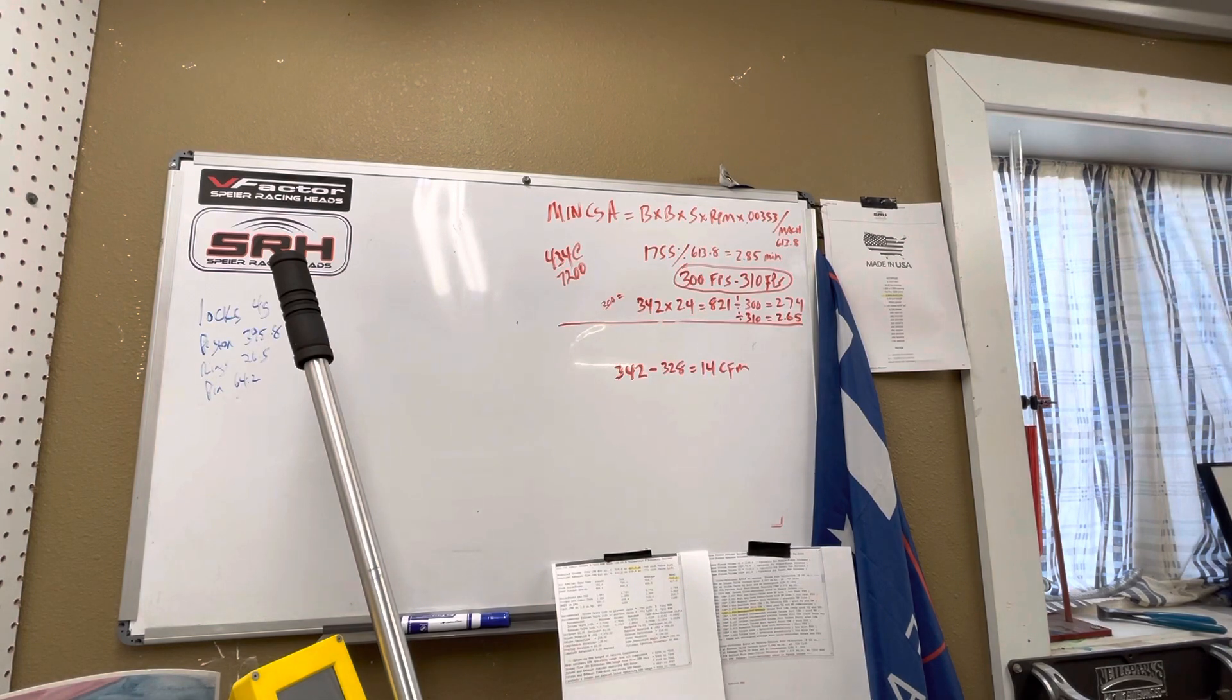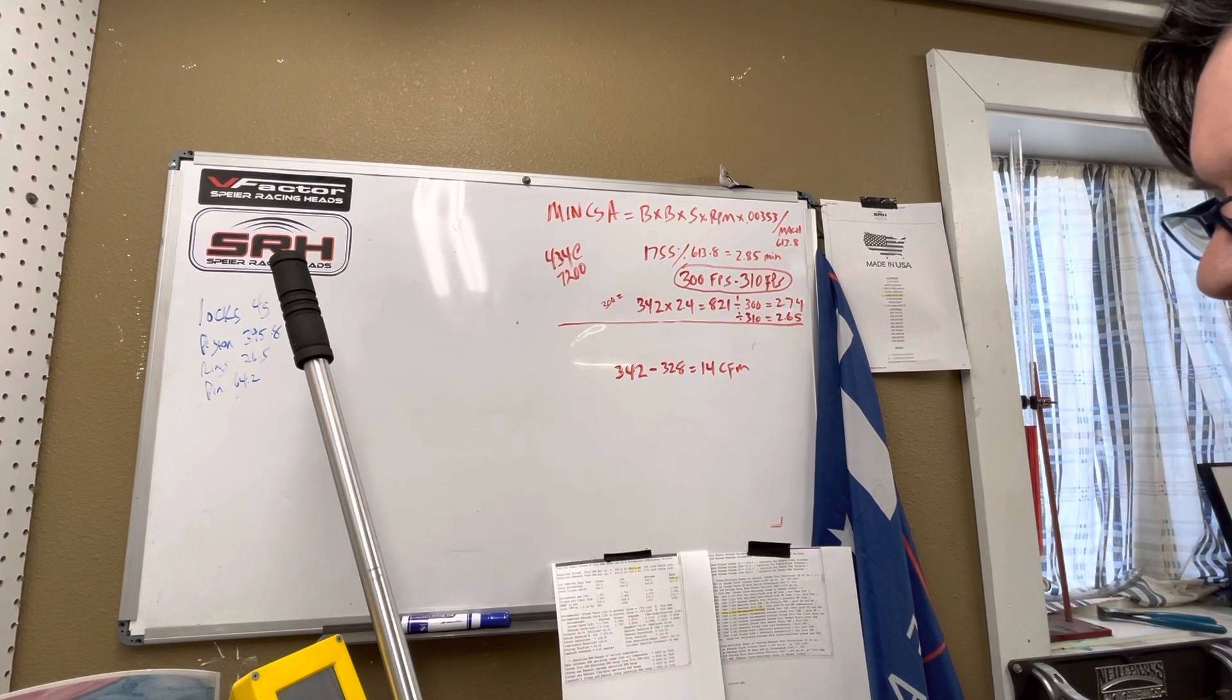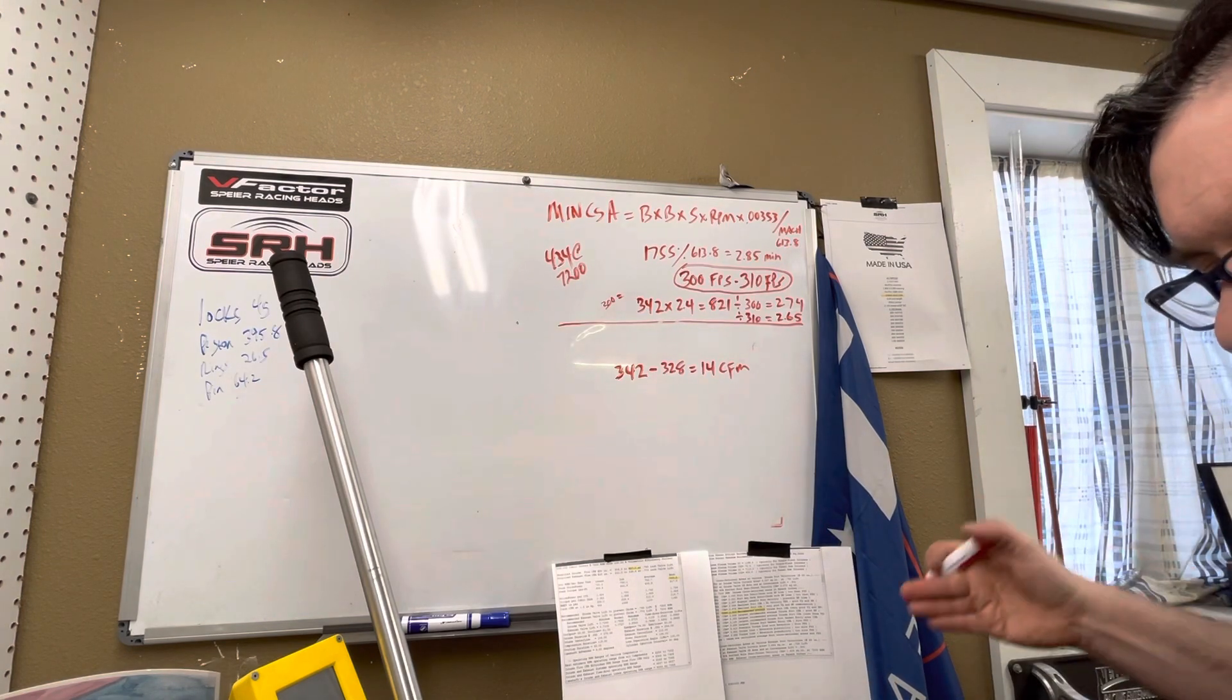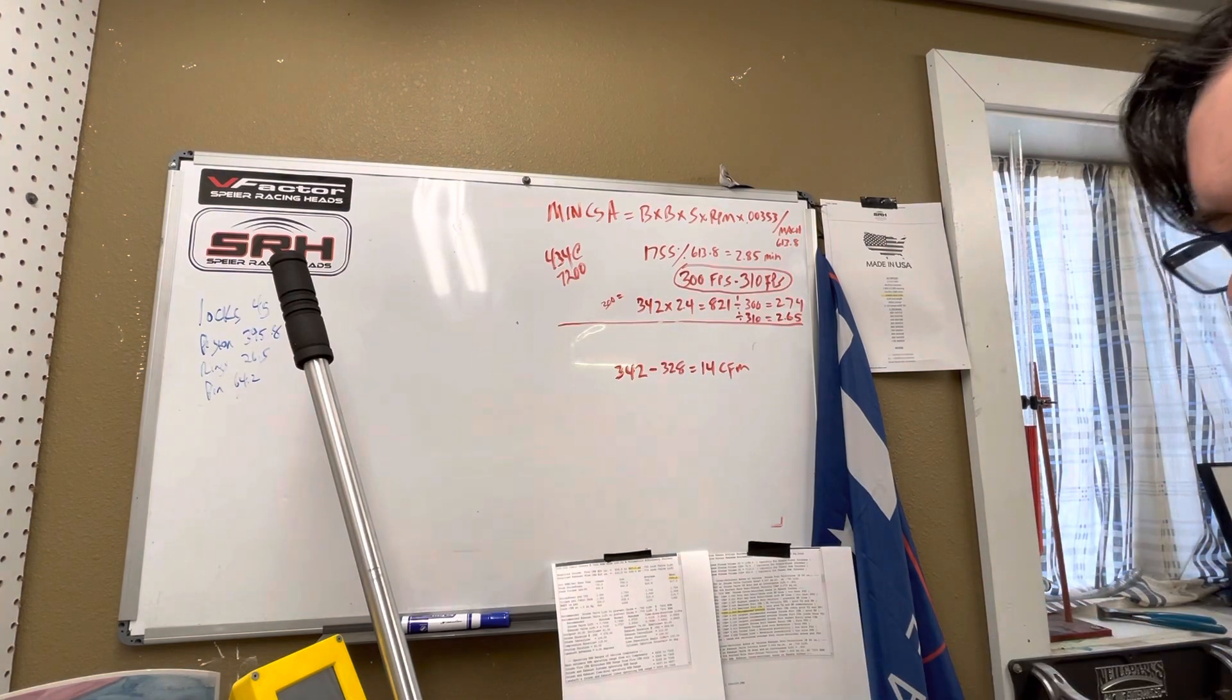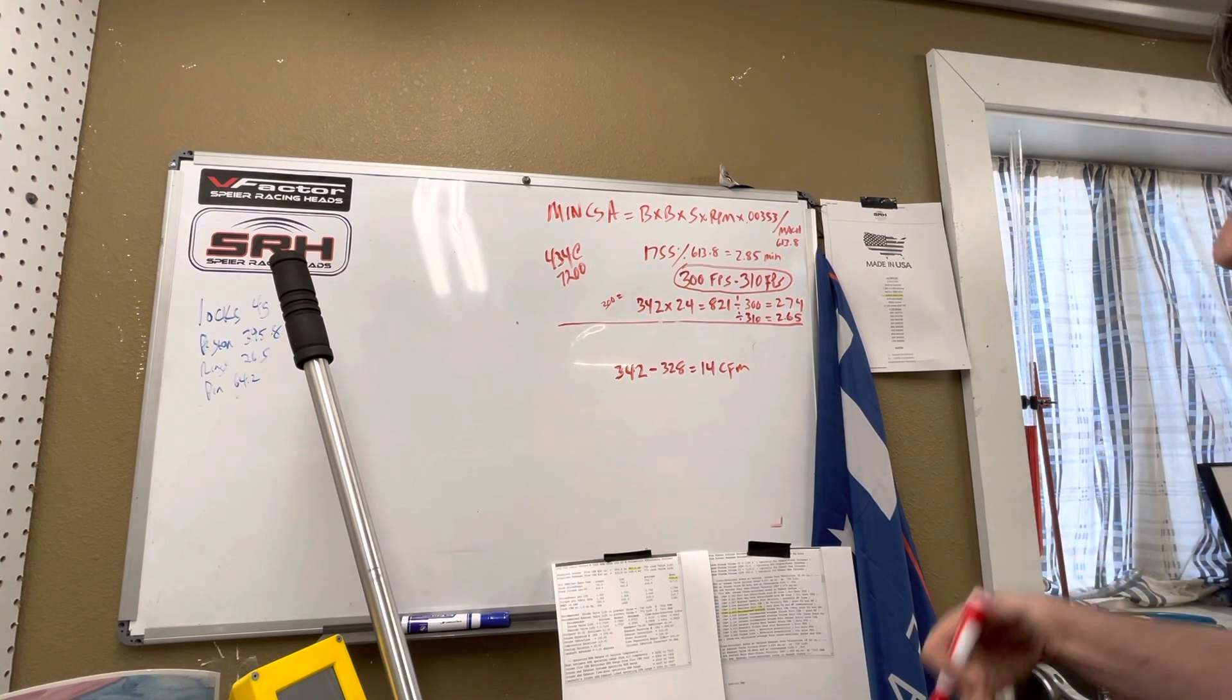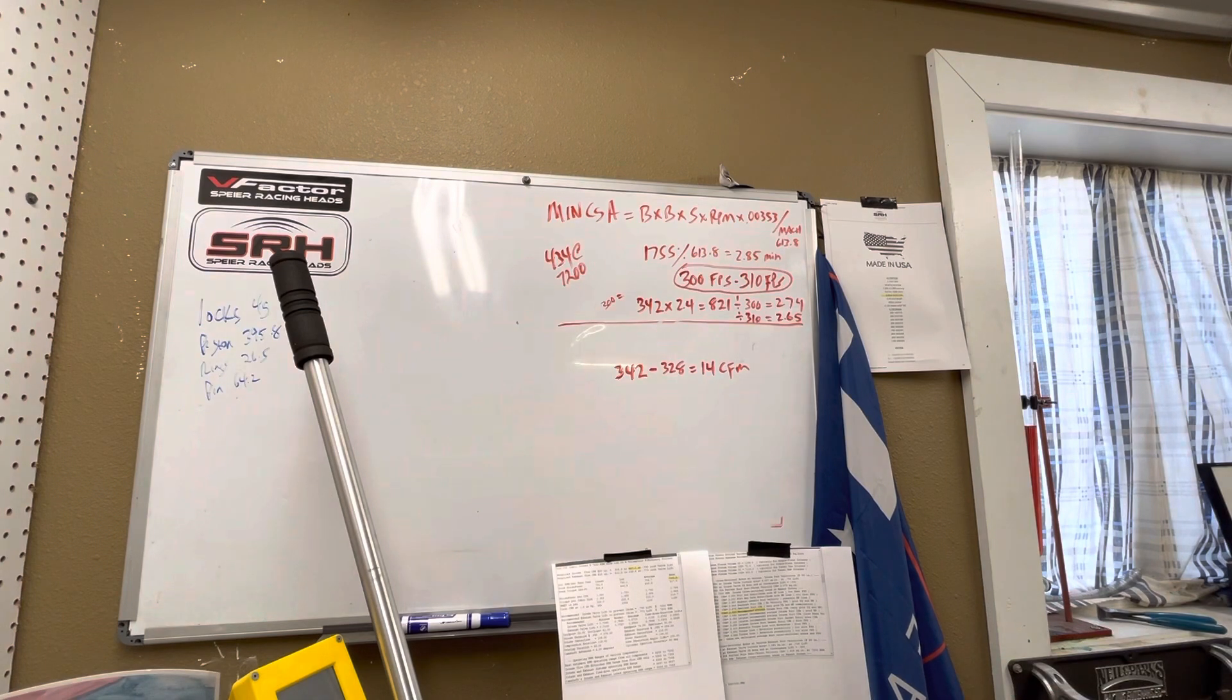Basically, a guy calls me and says I'm building a 434 with 23-degree heads and I don't want to turn it any harder than 7200. Right away, instantly I know I want to put them in my V-factor 2.7, which is 2.72 at the pushrod on 2.125-2.50 port. It's never let me down. It makes 740 to 780, man, 750 to 780 on most normal bracket style builds. Works really well.